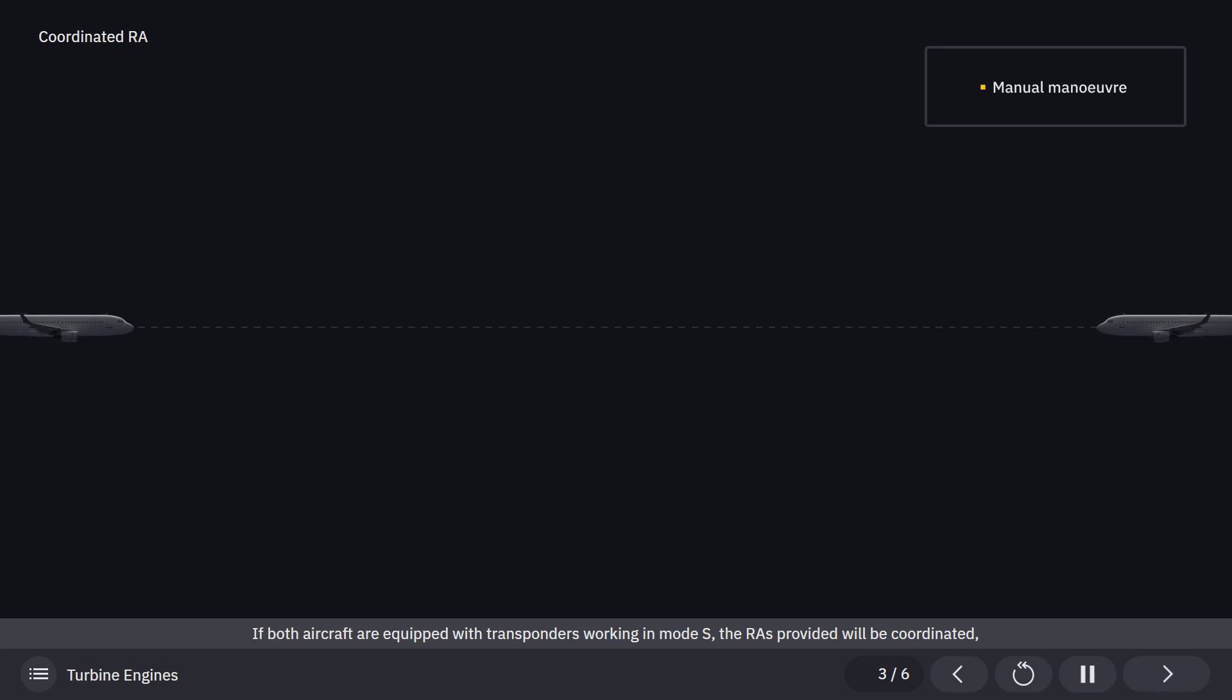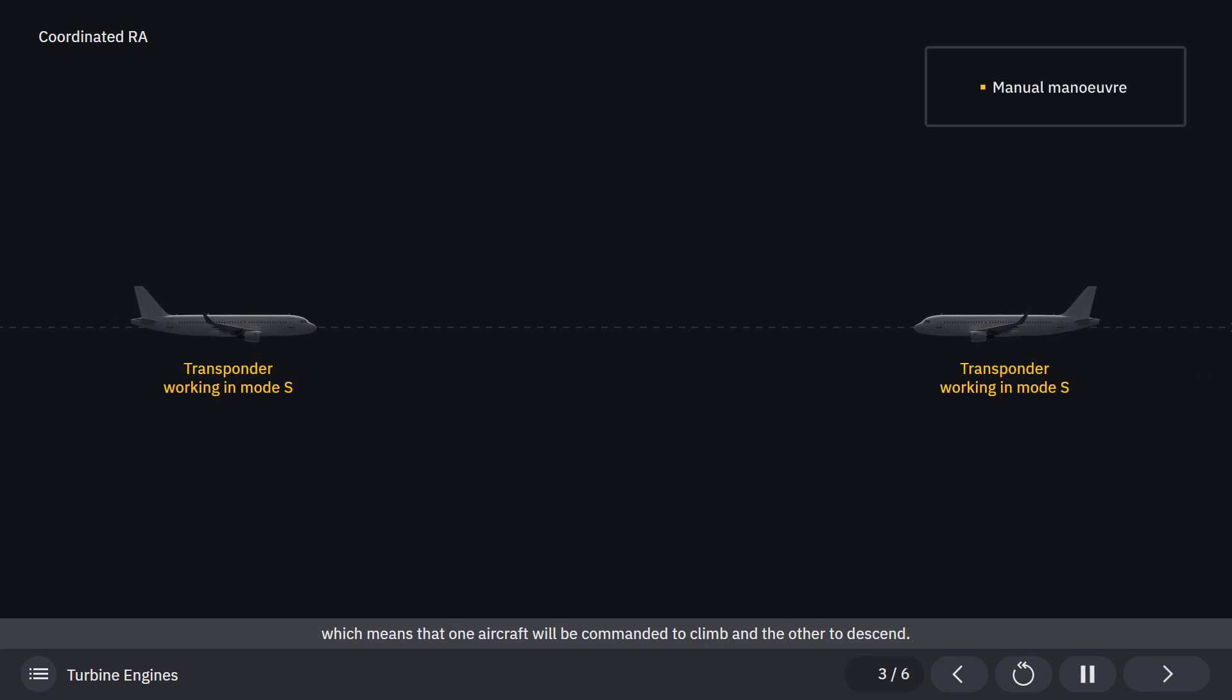If both aircraft are equipped with transponders working in mode Sierra, the resolution advisories provided will be coordinated, which means that one aircraft will be commanded to climb and the other to descend.